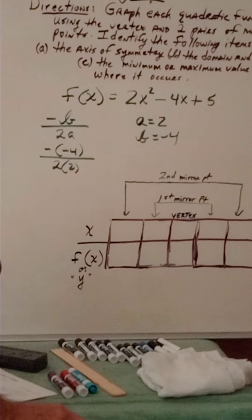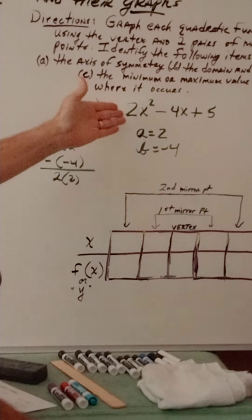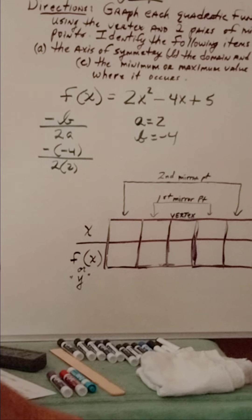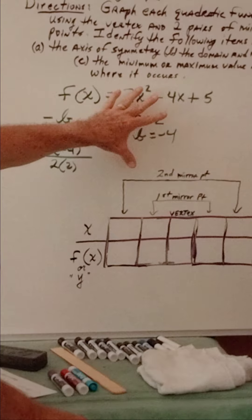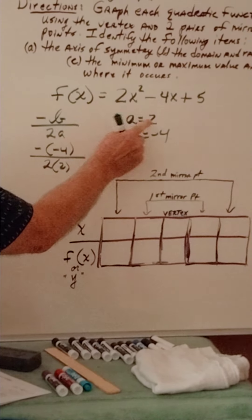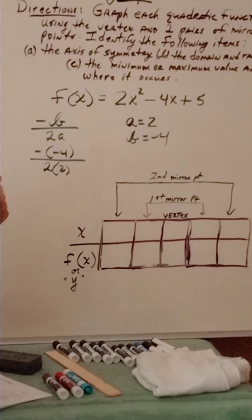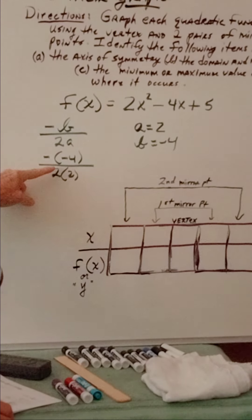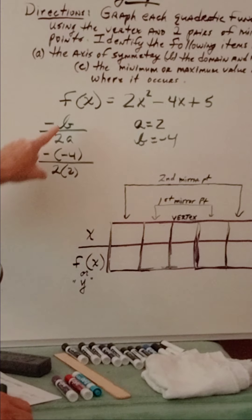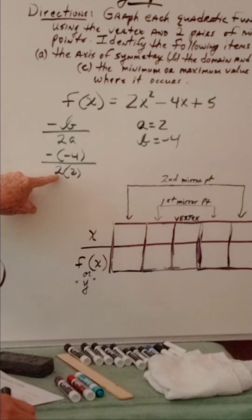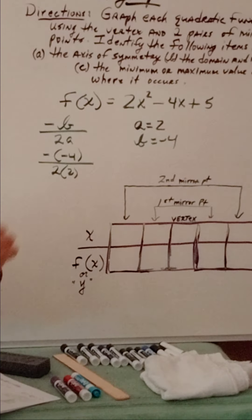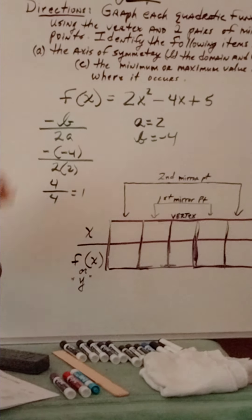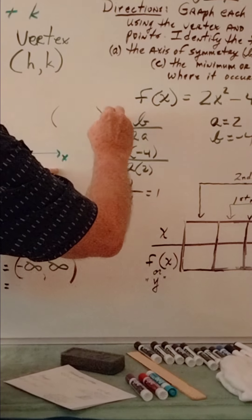Here's a quadratic function in the form we've already looked at: f of x is equal to 2x squared minus 4x plus 5. We're going to find the vertex. The value of a is 2, the value of b is negative 4. Using the formula for the x value of the vertex — the opposite of b over 2a — we get negative of negative 4, over 2 times 2, which gives us positive 4 over positive 4, so the x value of the vertex is 1.